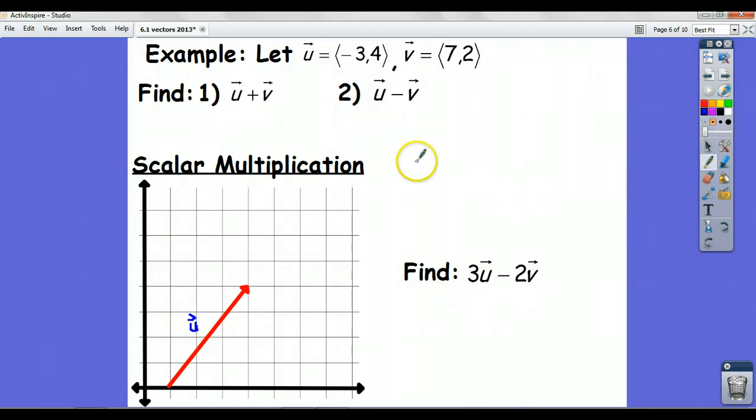All right, we've talked about adding vectors, and so as an example, I want to let you try this one, u plus v, if our vectors here are negative 3, 4, and v is 7, 2. So maybe pause the video and give that a shot, and then when you're ready, unpause.